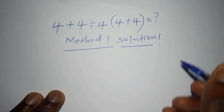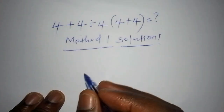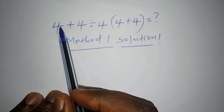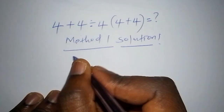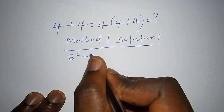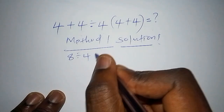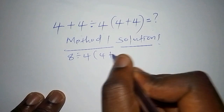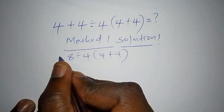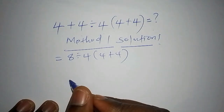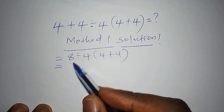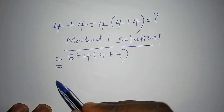Solution One. The problem is: four plus four, which is eight, then divided by four, multiplied by bracket four plus four, close the bracket. This is the first step of Method One. Now moving to the second step.